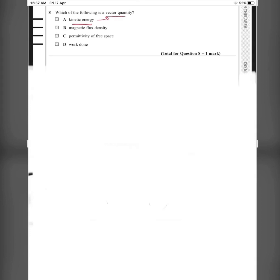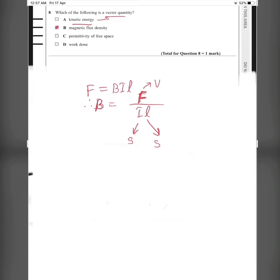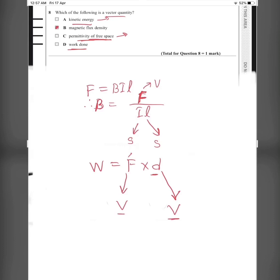Question 8: Which of the following is a vector quantity? Kinetic energy is a scalar. For magnetic flux density, since F = BIl, B = F/(Il) — force is a vector, current and length are scalars, so magnetic flux density is a vector quantity. Work done equals force times distance; though both force and displacement are vectors, their dot product gives a scalar, so work done is scalar. The answer is B (magnetic flux density).